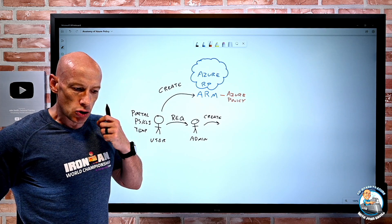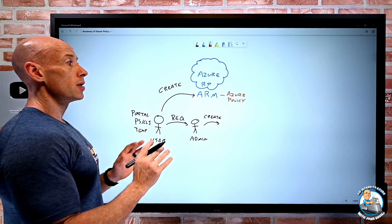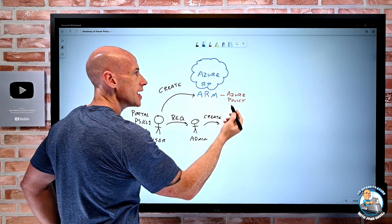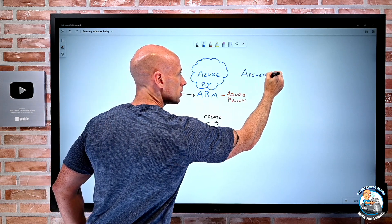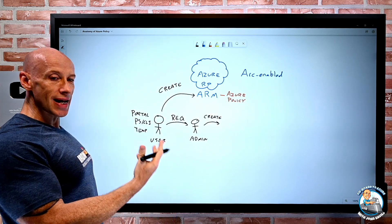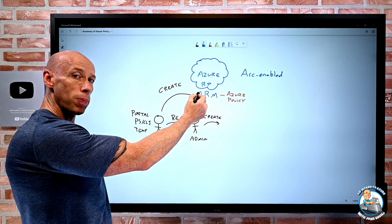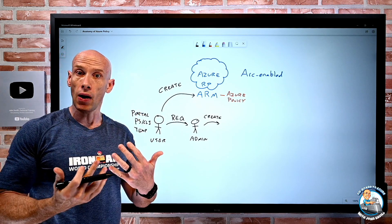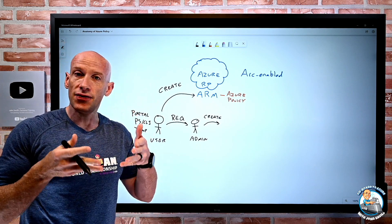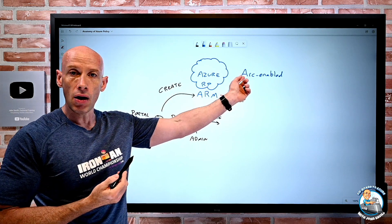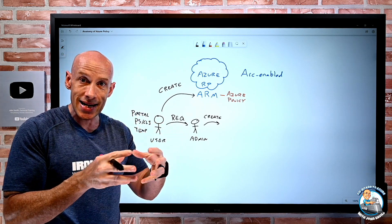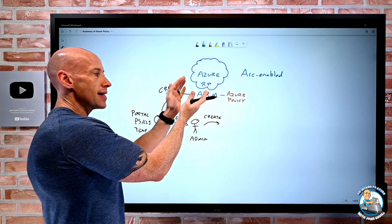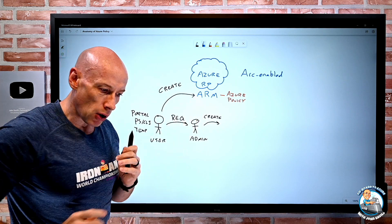We can use Azure Policy to really enforce those requirements we have. And remember — one of the big things we have today is this idea of ARC-enabled infrastructure and ARC-enabled Kubernetes. What ARC enablement does is take that Azure control plane to other clouds and to on-premises. So there are aspects of Azure Policy that will also apply to these ARC-enabled resources. Guest configuration applies to guest operating systems in Azure and to ARC-enabled servers. Policy around Kubernetes applies across these as well. Don't think of this as only Azure resources — because ARC enablement extends that Azure control plane elsewhere, Azure policies are going to apply there as well.